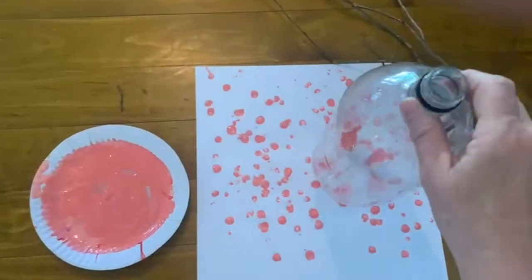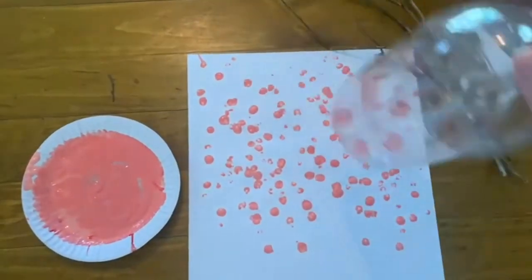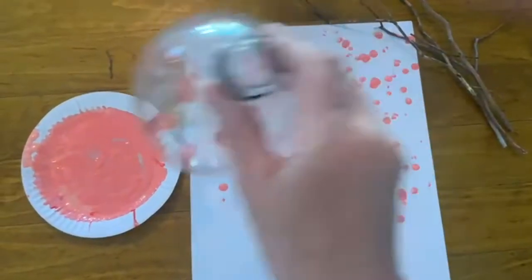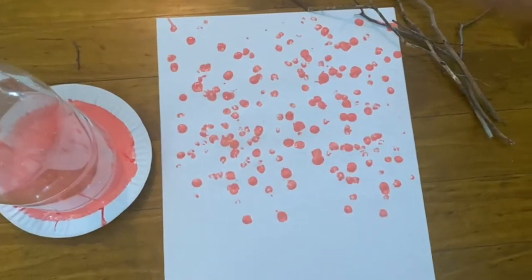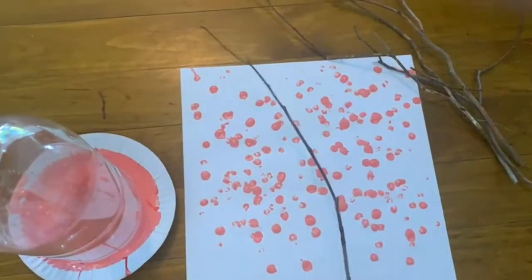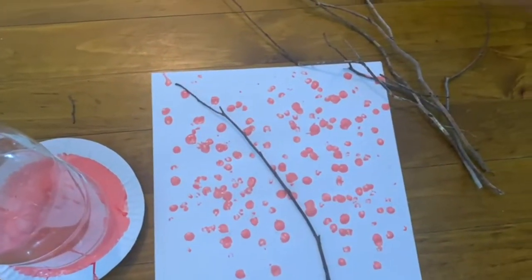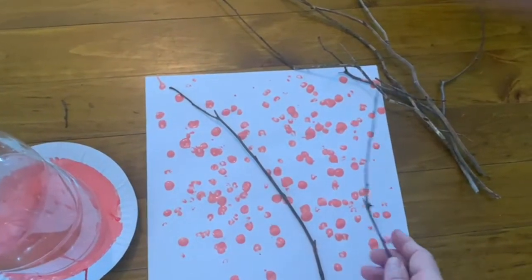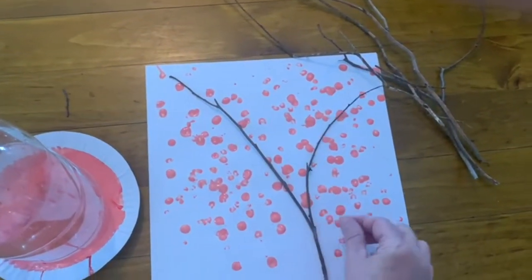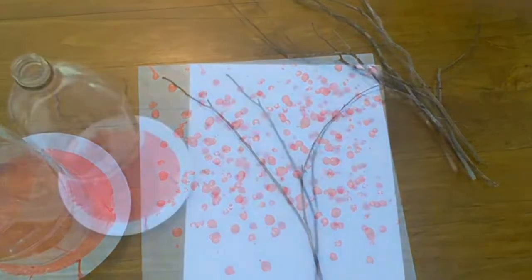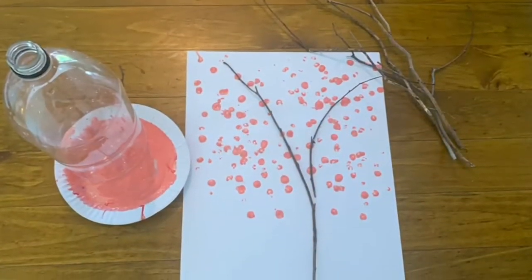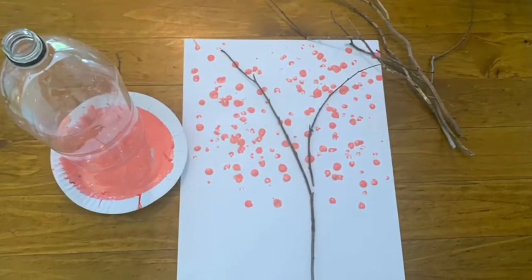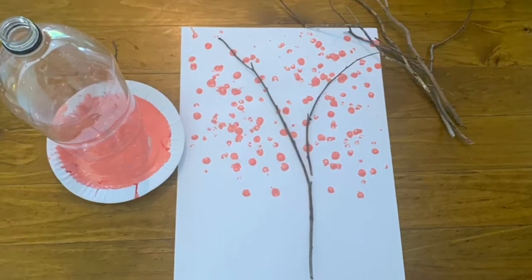Here I'm going to use the bottom of the bottle and do some stamping just like this. Then any twigs or branches that you may have outside, you just place on top of your beautiful cherry blossoms and then just sticky tape them down on top and then you have a cherry blossom tree.